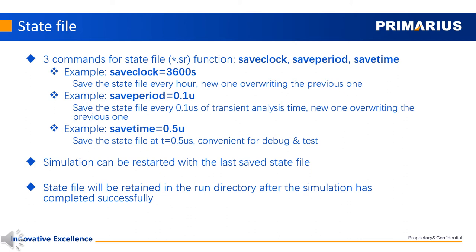If we set save period equal to 0.1 micro, the simulator will save the state file every 0.1 microseconds of transient analysis time, new one overwriting the previous one. If we set save time equal to 0.5 micro, the simulator will save the state file at t equal to 0.5 microseconds. This is convenient for debug and testing purposes.